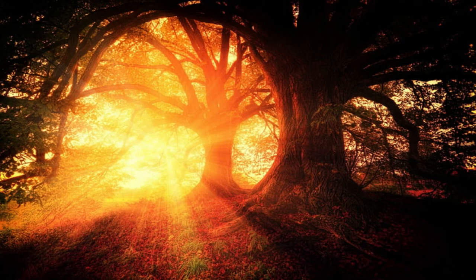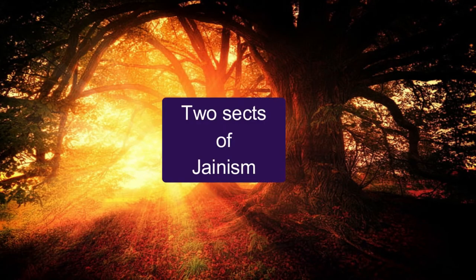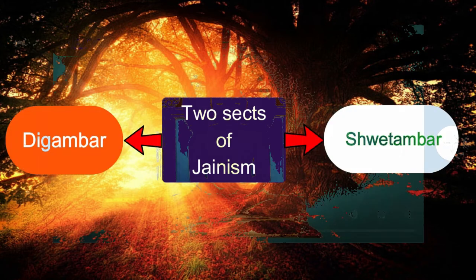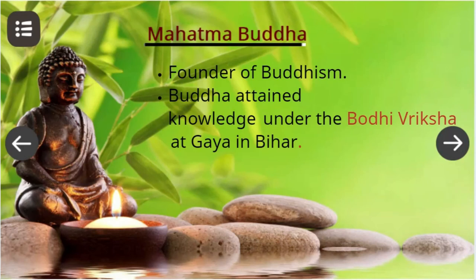Further, Jainism was divided into two sects: Shwetambara and Digambara. Let's know one more religion, that is Buddhism. Mahatma Buddha was the founder of Buddhism. He attained knowledge under the Bodhi Vriksha at Gaya in Bihar.